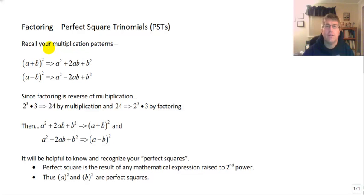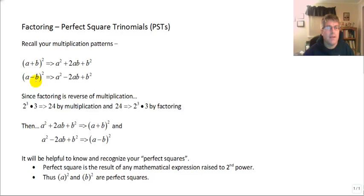Let's recall our multiplication patterns. We know that the quantity a plus b squared, when multiplied out, gives us a squared plus 2ab plus b squared. And the quantity a minus b squared, very similar pattern, gives us a squared minus 2ab plus b squared.